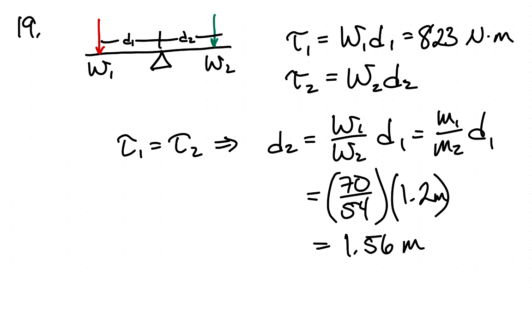And we know their masses. The mass of Brett is 70 kilograms. Dawn's mass is 54 kilograms. We know d1 is 1.2 meters. So that gives us that Dawn needs to sit 1.56 meters from the fulcrum. Obviously because she weighs less, she has to sit farther away than Brett does.